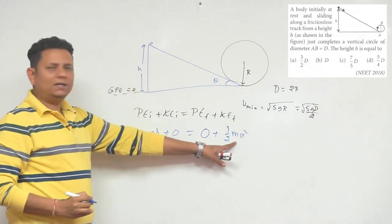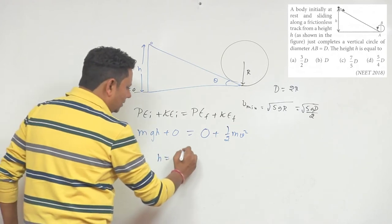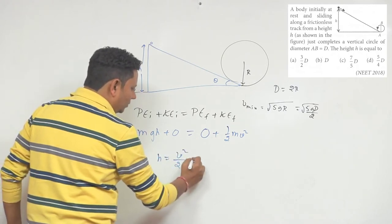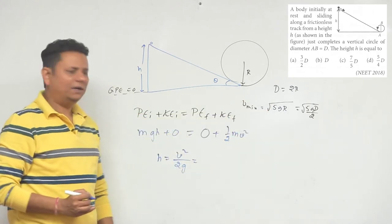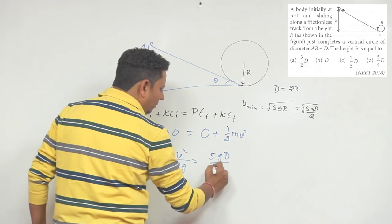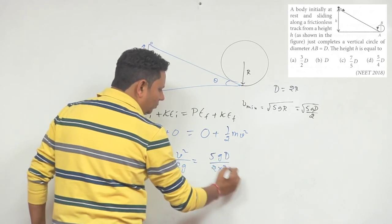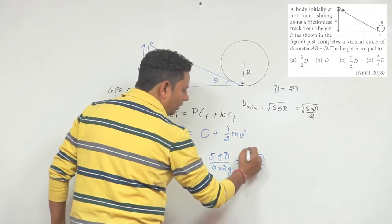Based on this, mass M on both sides will get cancelled. H equals V squared divided by 2G. If we substitute the value of V, it will be square root of 5G times D by 2, all squared, divided by 2G. G cancels, so the answer is 5D by 4.